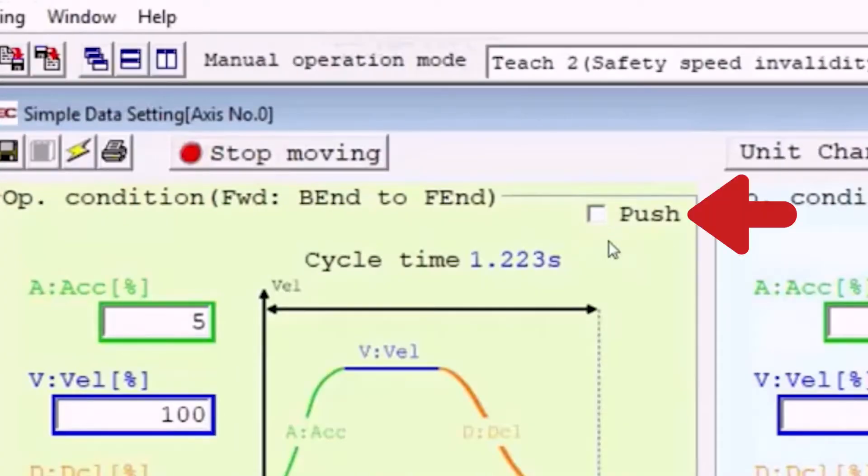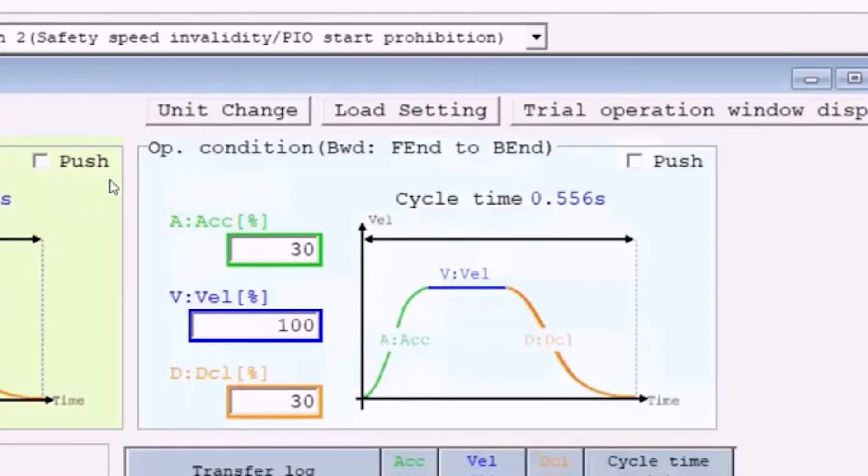We can also check the box here to indicate that this is a push move. The operation condition Far End to Base End is shown here in a blue box where we can set different parameters for the return to base move.